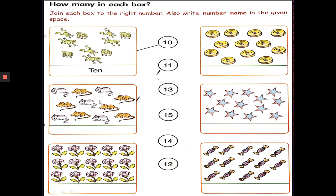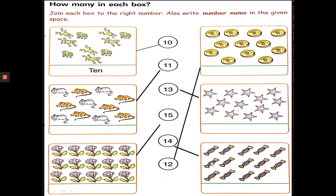Similarly, here how many rats are there? There are 11 rats. Then 15 flowers, so it will be matched with the number 15. Here you have 13 stars, so it will be matched with the number 13. Then 12 coins, matched with the number 12. How many toffees are there? 1, 2, 3, 4, 5, 6, 7, 8, 9, 10, 11, 12, 13 and 14. So it will be matched with the number 14.